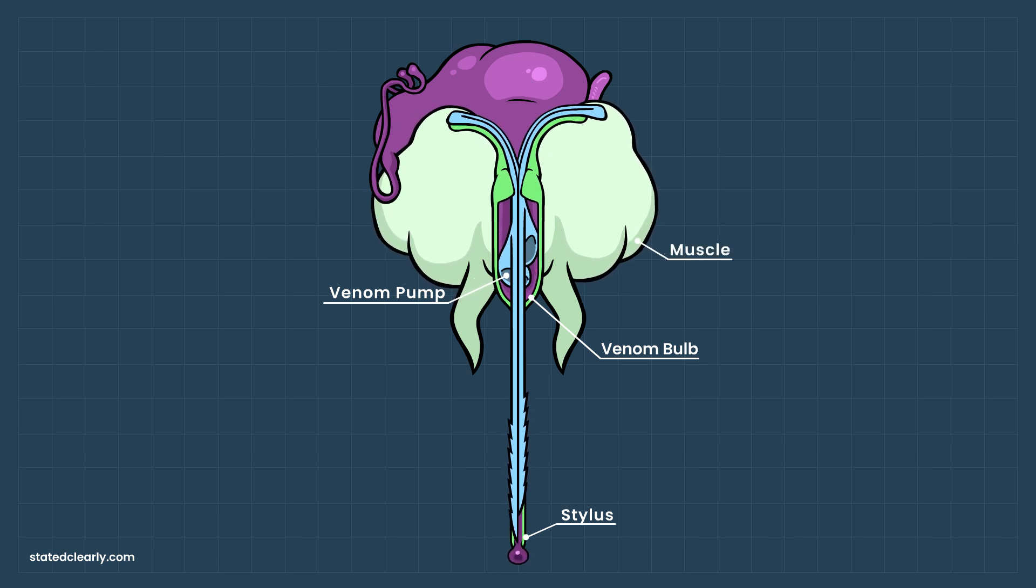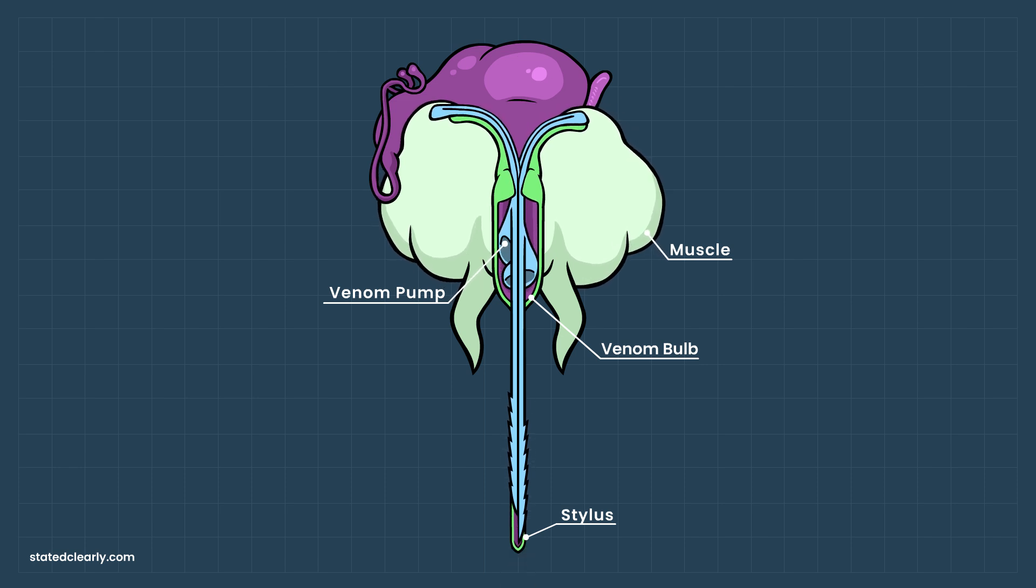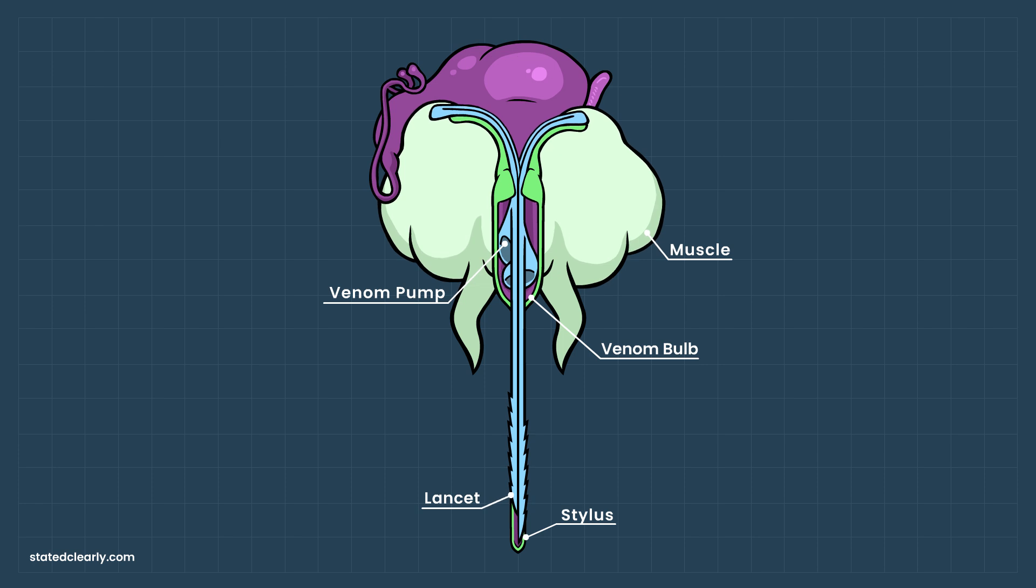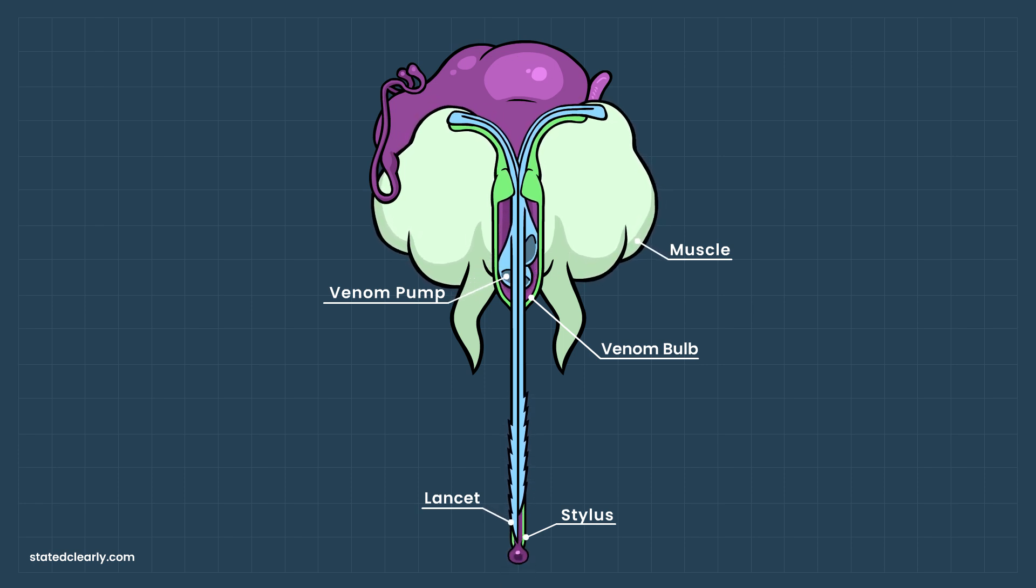Above the bulb, there are muscles attached to plates of exoskeleton that power each lancet shaft. Every muscle pull simultaneously moves the lancet's digging blade and its accompanying pump. It automatically injects more venom every time it digs. It's a two-for-one deal.